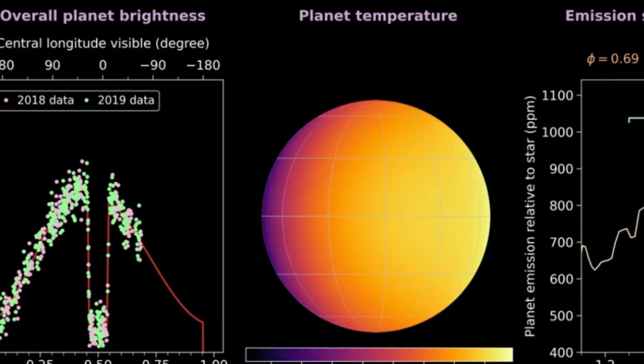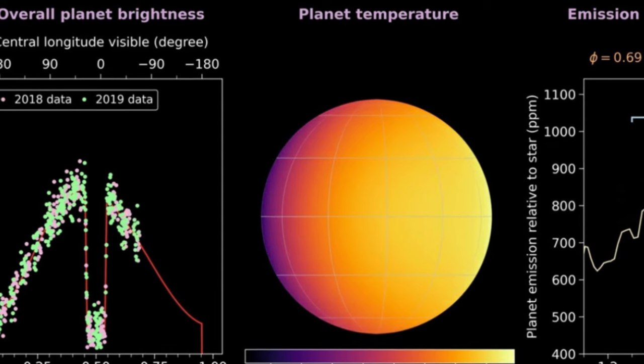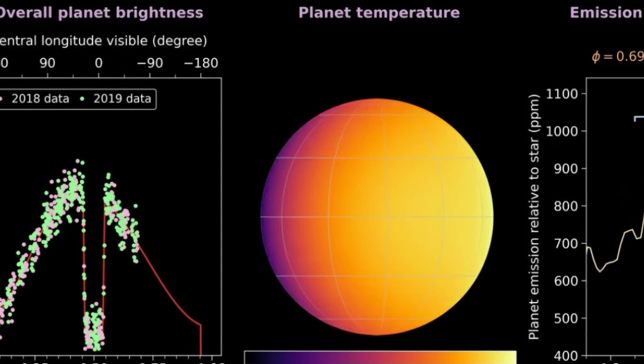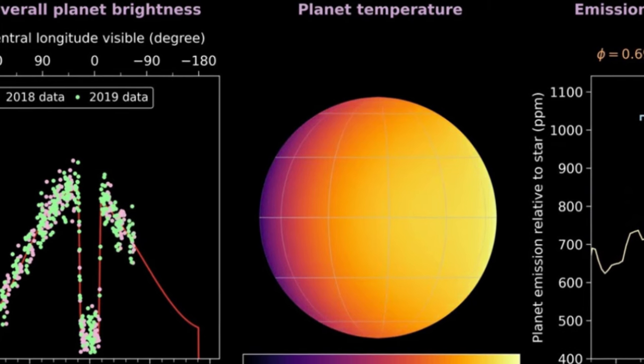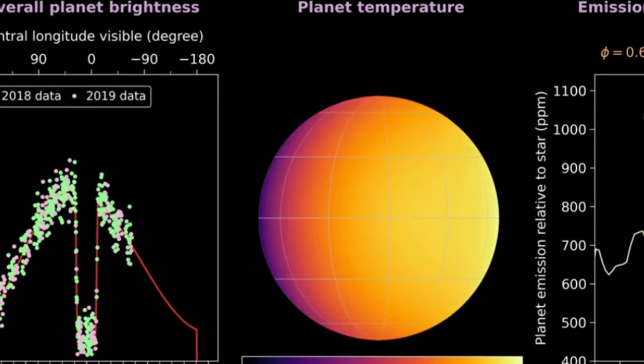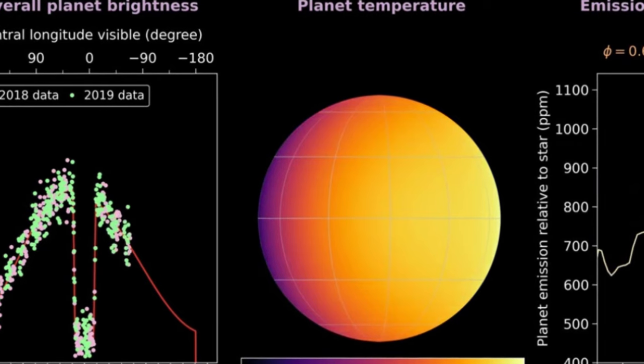Webb observations might help solve this mystery. That would be the first time we could measure a carbon-bearing molecule in this planet's atmosphere, Michael Evans says. The amount of carbon and oxygen in the atmosphere provides clues on where these kinds of planets form.